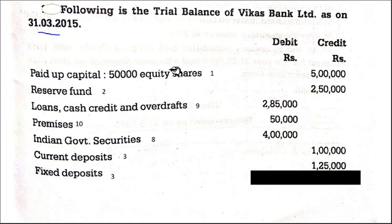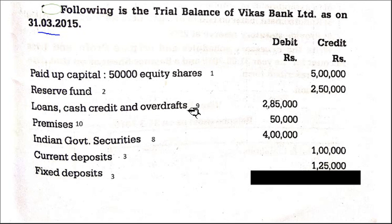So here we can see one by one: paid-up capital — share capital goes to Schedule 1. Reserve fund goes to Schedule 2, reserves and surplus. Loans, cash credit and overdrafts go to Schedule 9 because it is advances — it is an asset. We are giving advances to the public. Premises goes to Schedule 10, fixed assets. Indian government securities — this is investment, so Schedule 8.